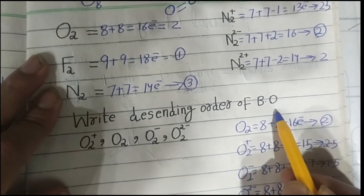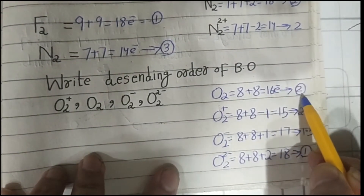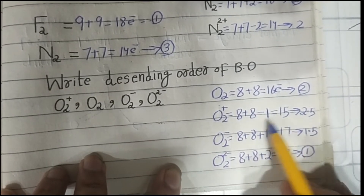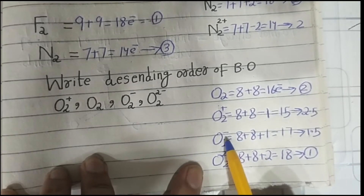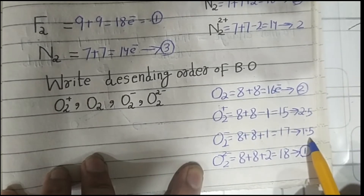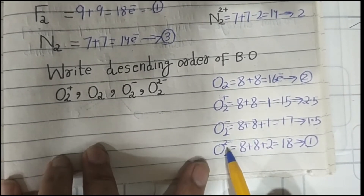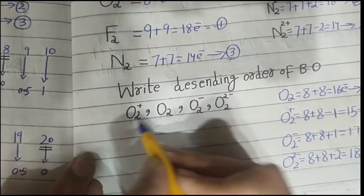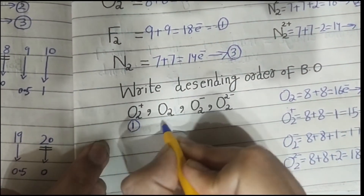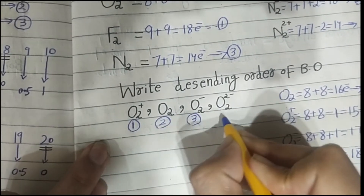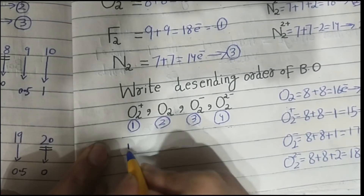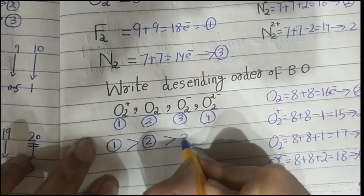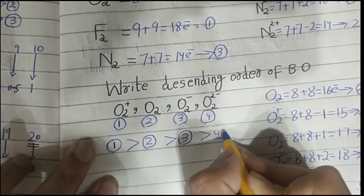Now we write the ascending order of bond order for oxygen species. Oxygen (O2) contains 16 electrons and two bond orders. With a plus one charge (minus one electron) it contains 2.5 bond orders. With a minus one charge (plus one electron) it contains 1.5 bond orders. With a minus two charge it contains one bond order. So the descending order is: position one greater than two, two greater than three, three greater than four.